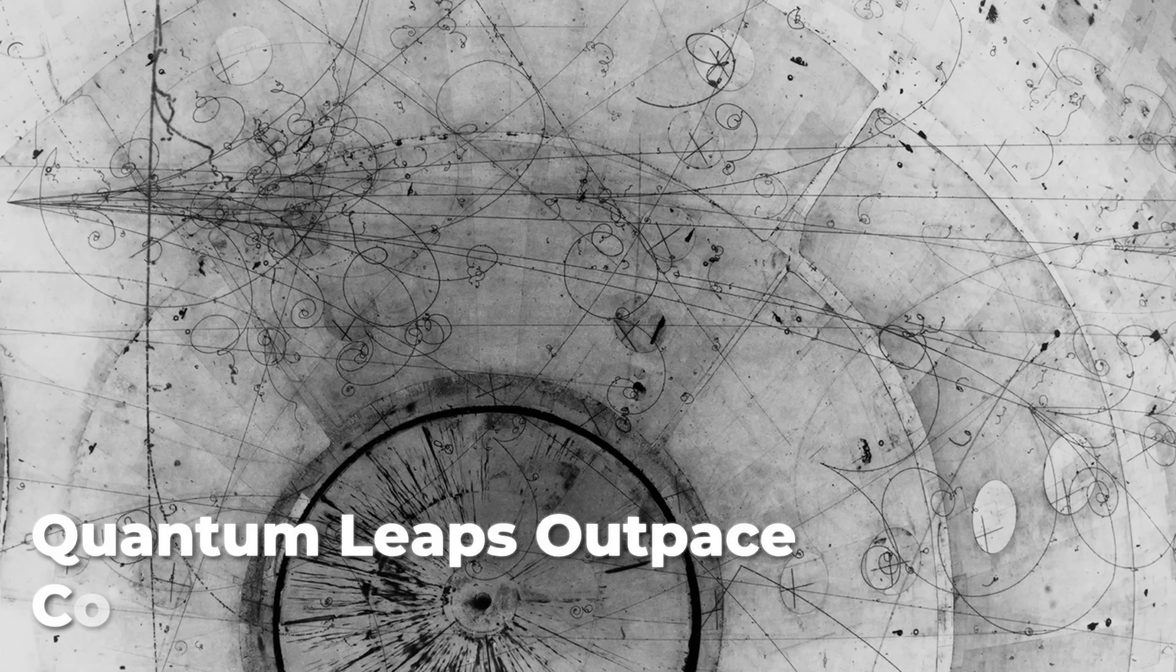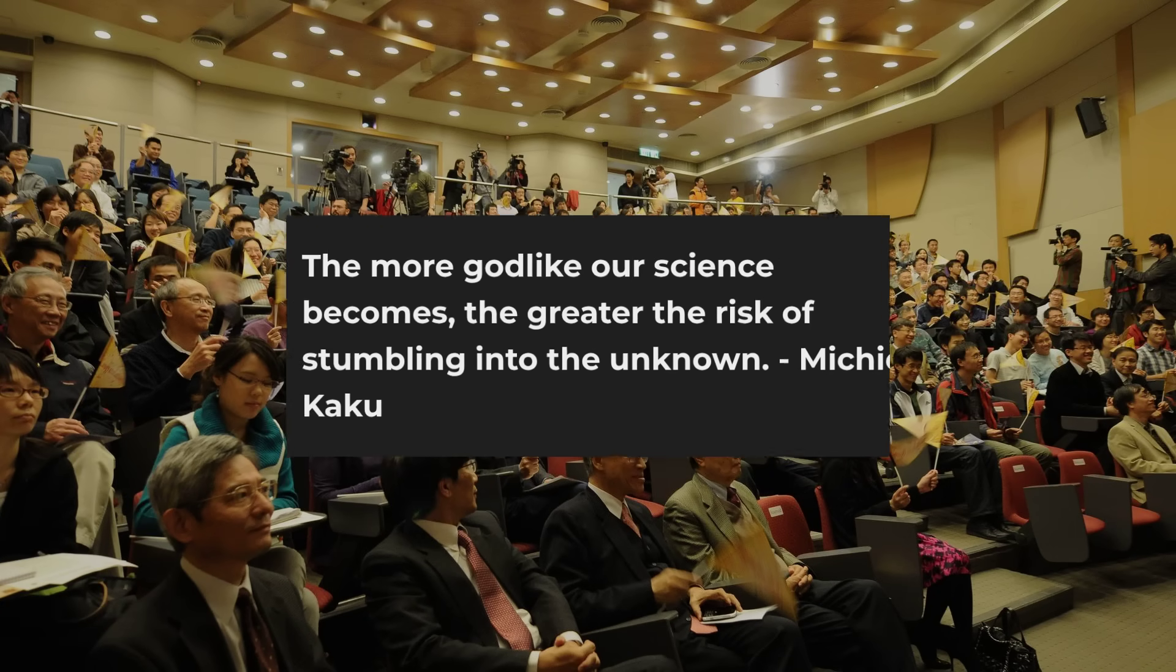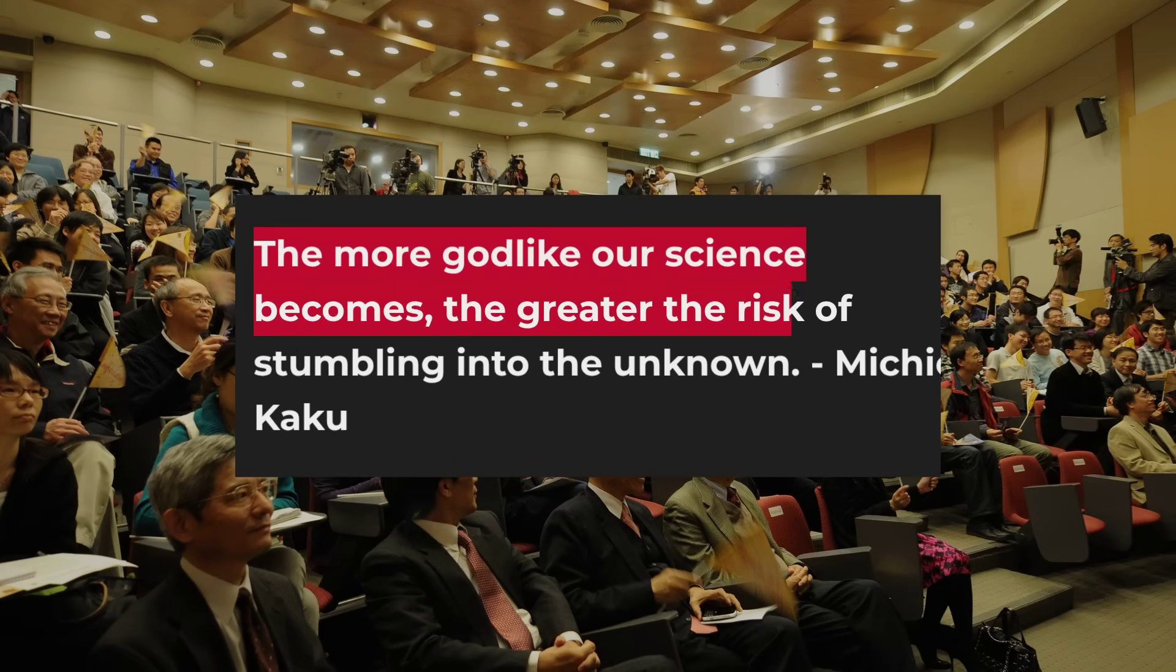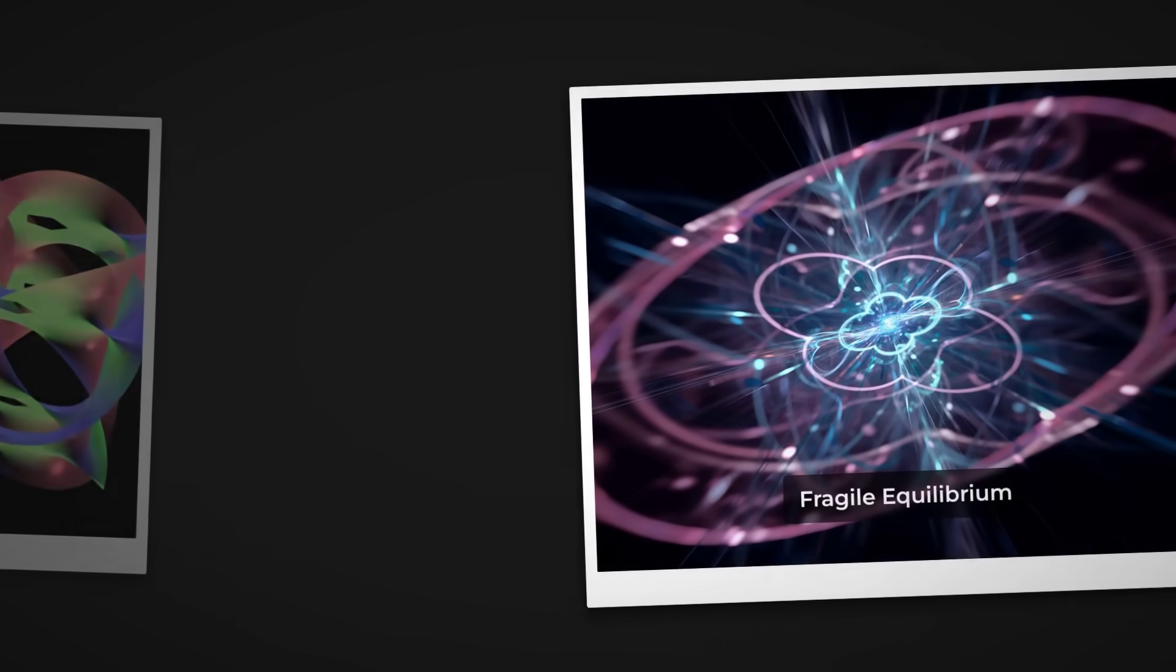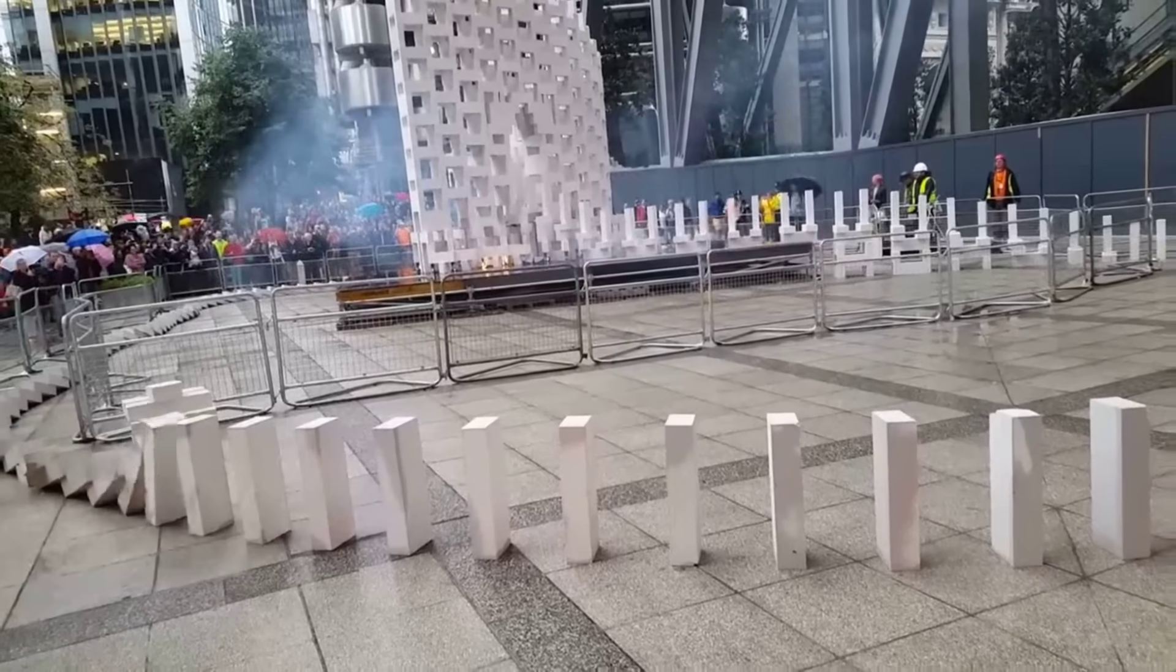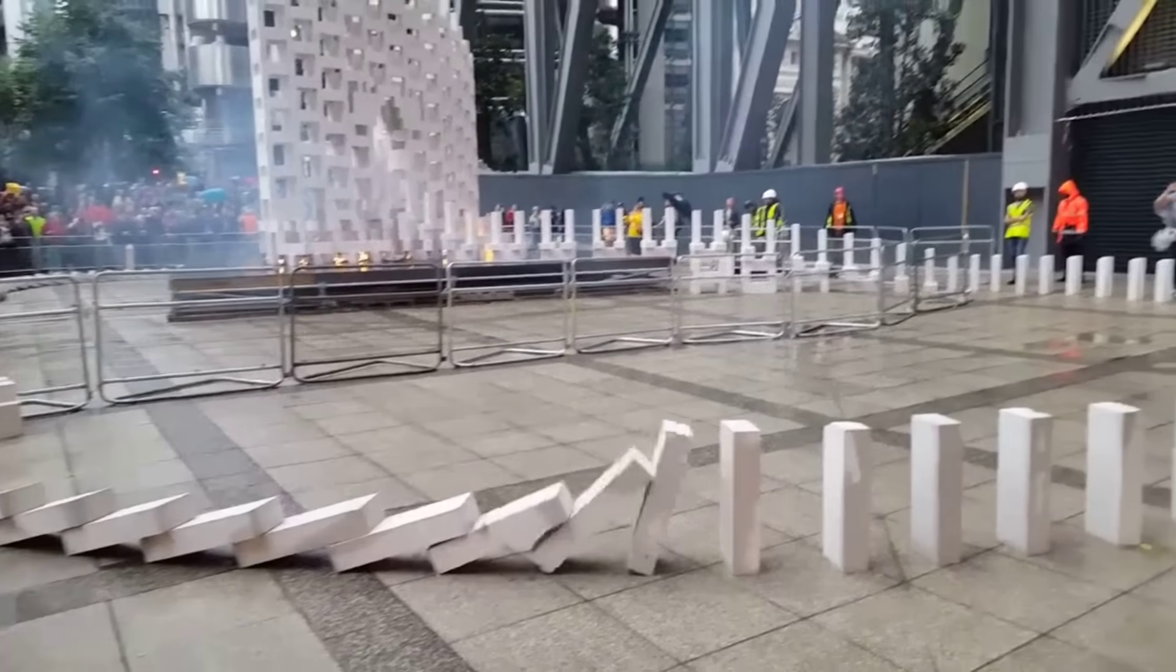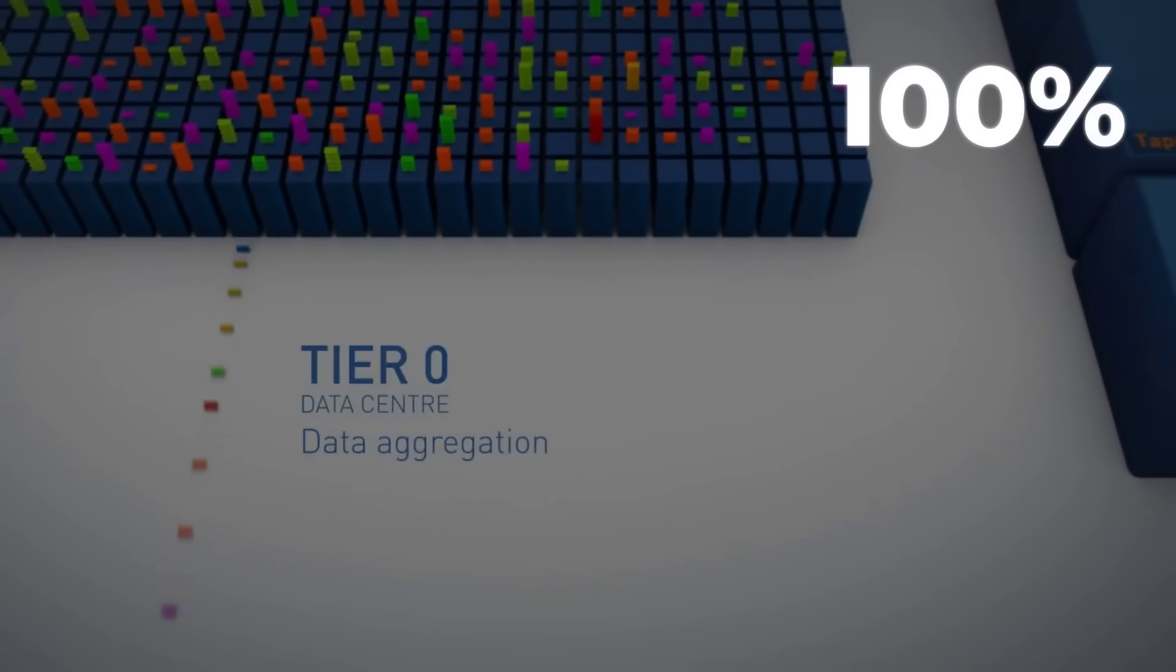He's warned before that quantum leaps in physics can outpace our ability to control them. In lectures and books, Kaku has argued that the more godlike our science becomes, the greater the risk of stumbling into the unknown. String field theory, his own brainchild, predicts a universe of hidden dimensions and delicate balances, systems that could unravel if the wrong lever gets pulled. The numbers from ATLAS suggested a lever had just been hit.